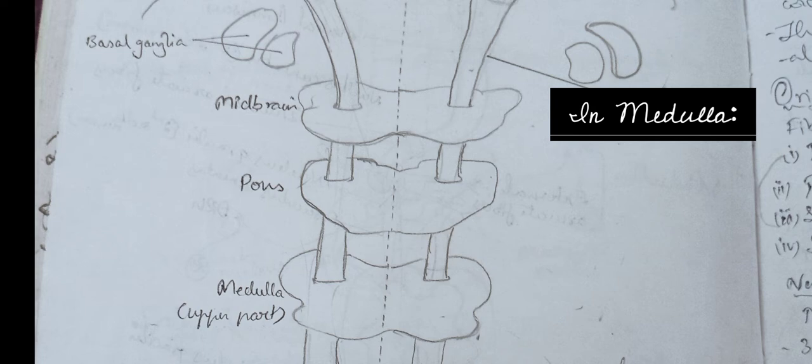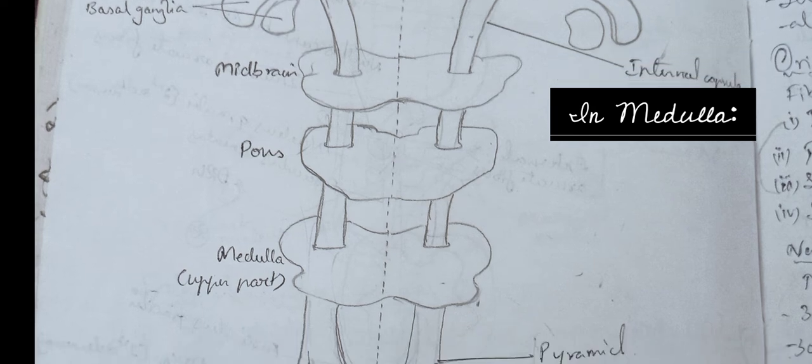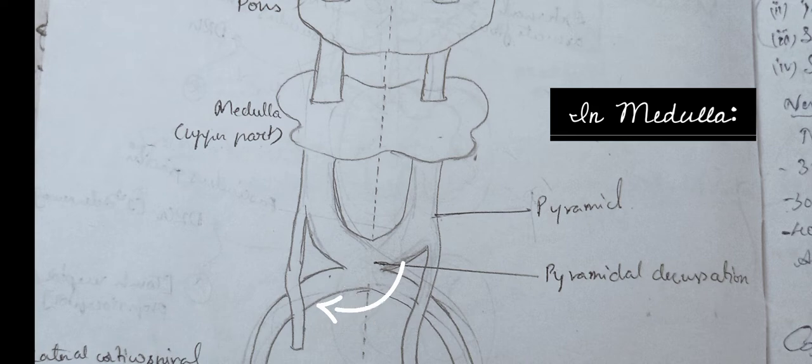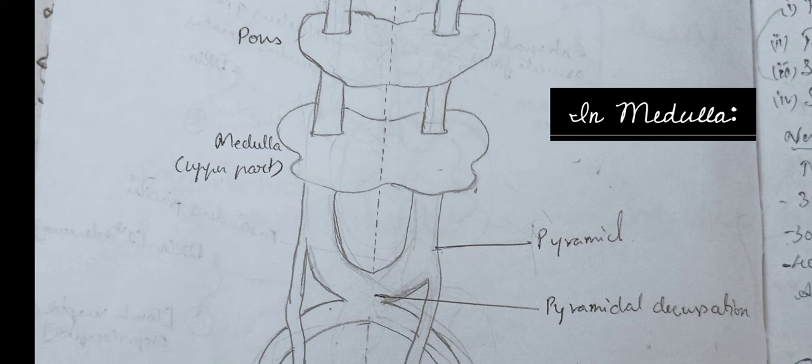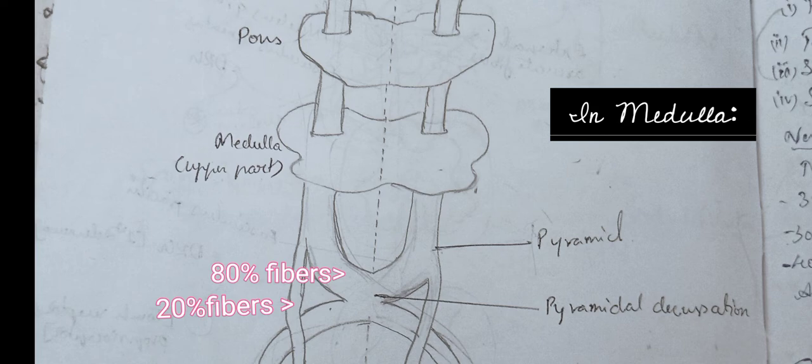In the medulla upper part, fibers from both sides cross and form decussation. This gives a pyramidal appearance, hence the name. In fact, not all the fibers cross, but only 80% cross. The remaining 20% of fibers descend through the same side.